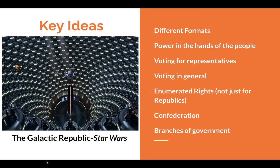Republics also have enumerated rights — specific rights of people that are laid out in writing, most famously in the United States Bill of Rights and the English Bill of Rights as well. Constitutions can also provide that if a right isn't given to the federal or state government, that right resides in the hands of the people. These can be regulated in various ways depending on the country, but in general, people's rights are written down and can therefore be protected — and that's crucial.